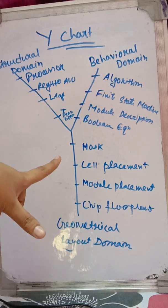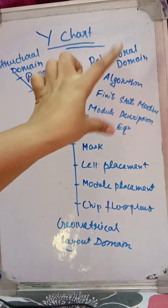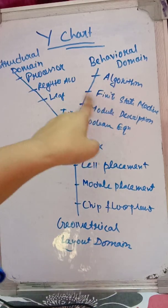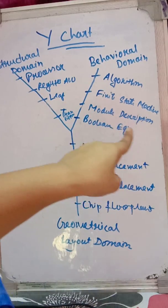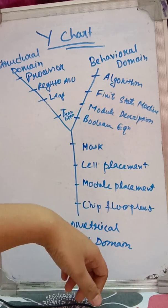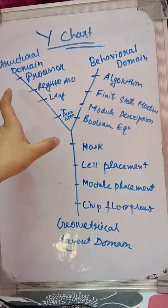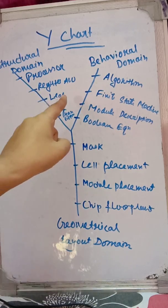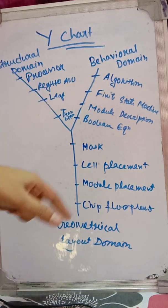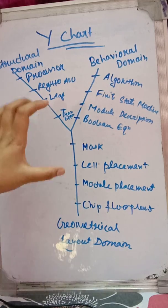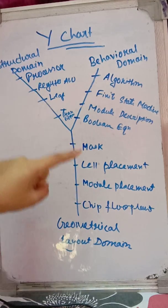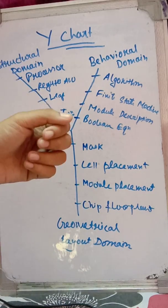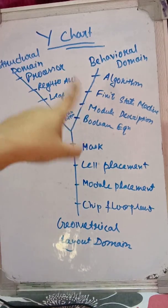To summarize: the behavioral domain is divided into Algorithm, Finite State Machine, Module Description, and Boolean Equation. The structural domain is divided into Processor, Register, ALU, Leaf, and Transistor. The geometrical layout domain is divided into Mask, Cell Placement, Module Placement, and Chip Floor Plan.